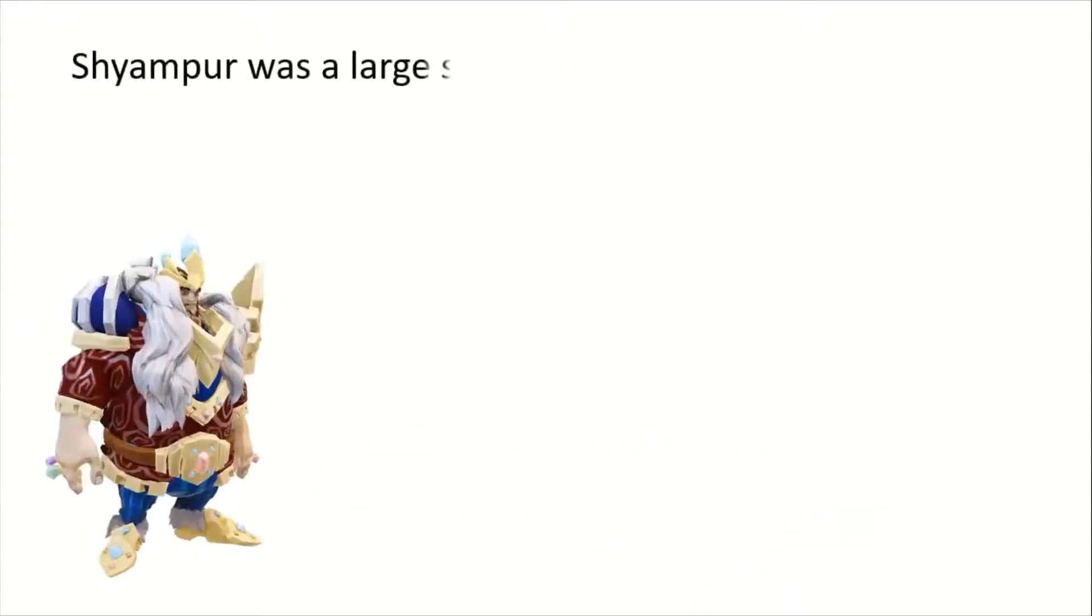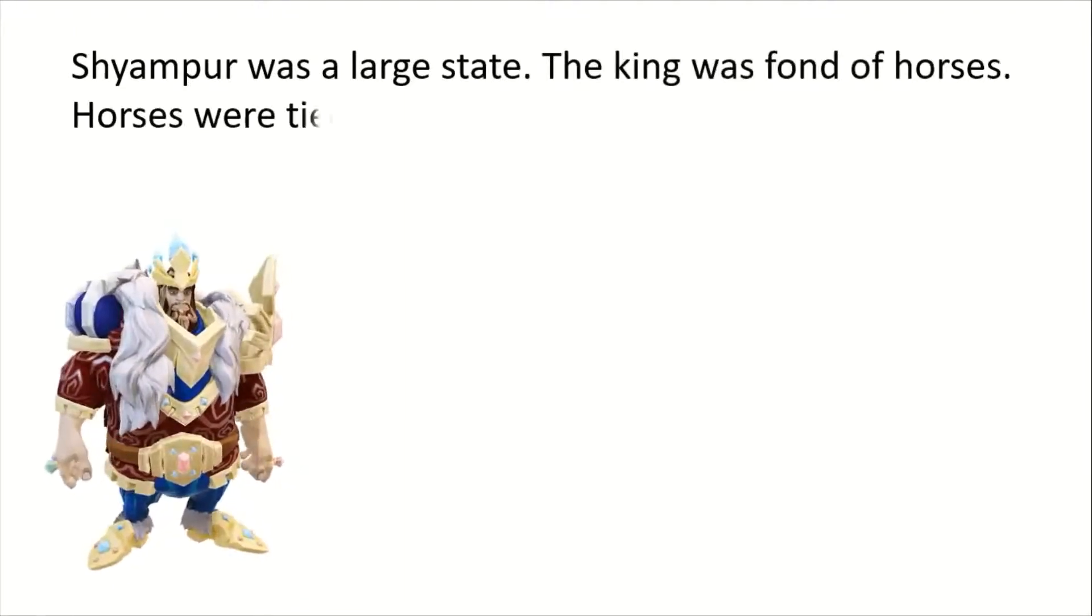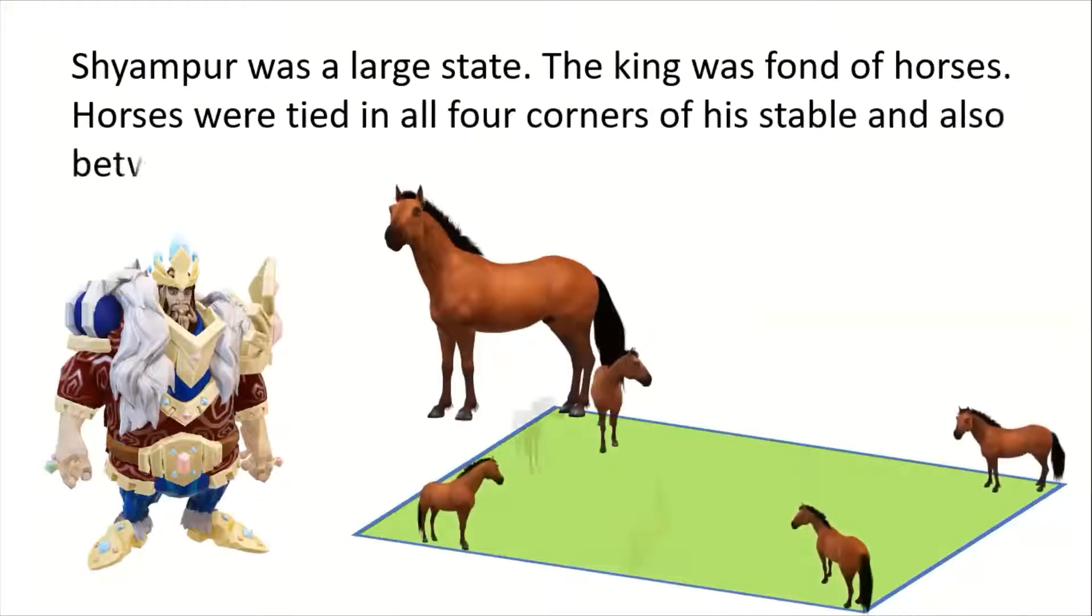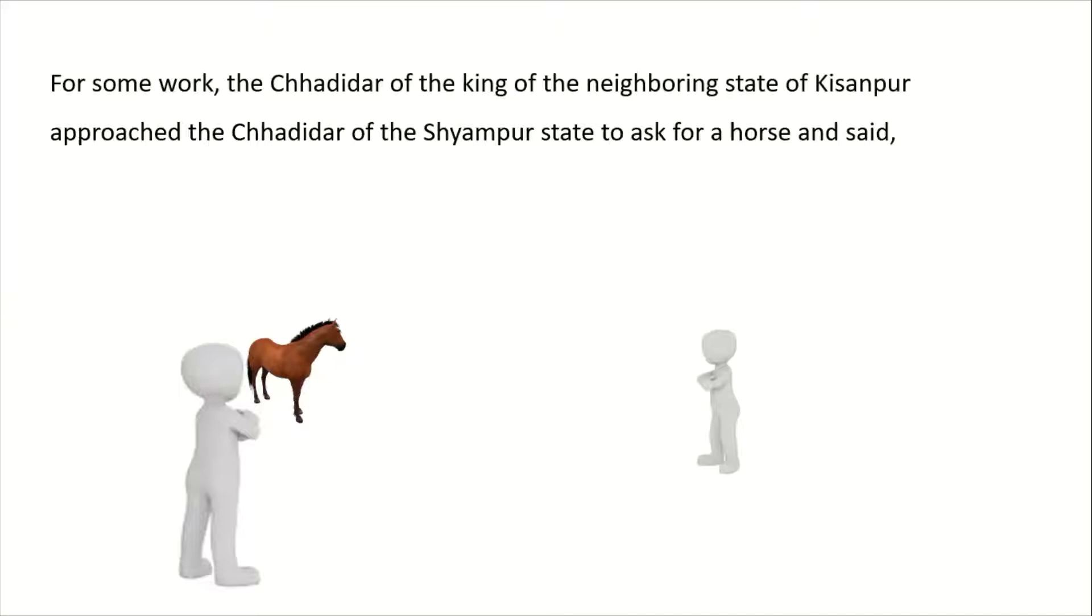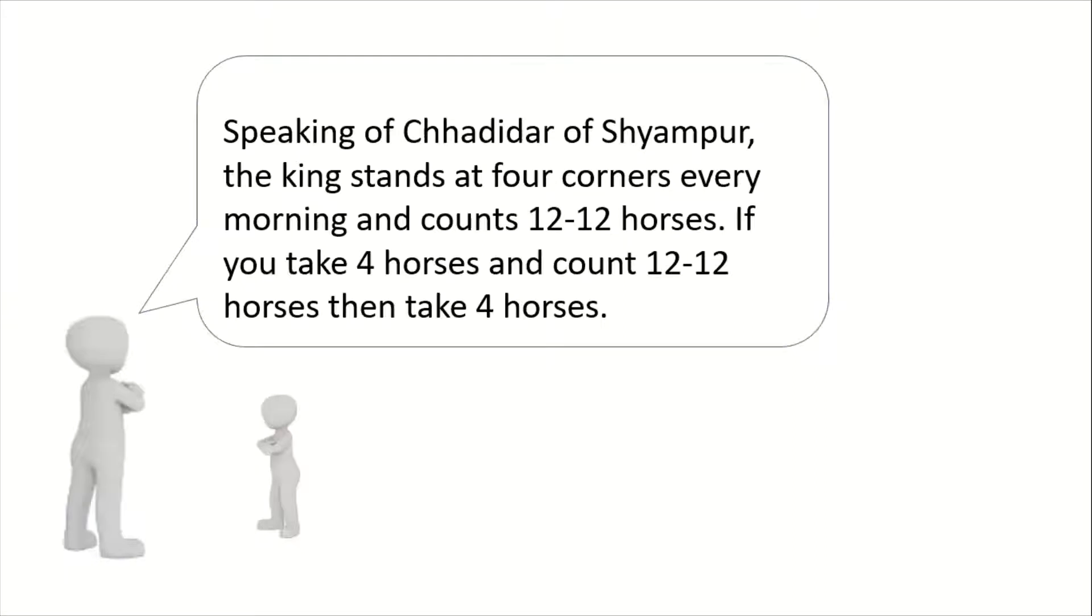Shiyampur was a great king. The king had horses in the castle, arranged in the four corners. One day, Shiyampur was watching the horses. The king says, I want you to arrange the horses so that from each of the four corners I can count twelve horses.